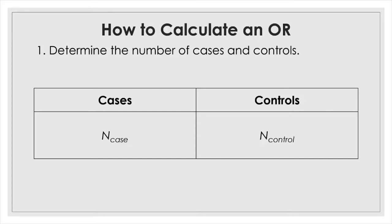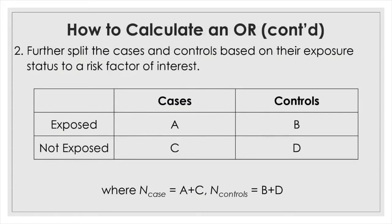Here is the step-by-step procedure to calculate an odds ratio. First, you need to identify the number of cases with disease and healthy controls. Once you do that, you need to further split the cases and controls based on their exposure status to a risk factor of interest.